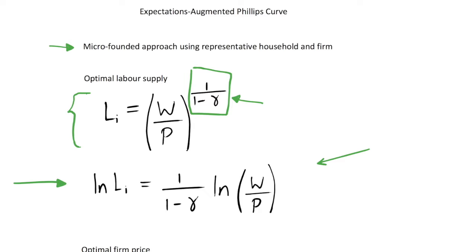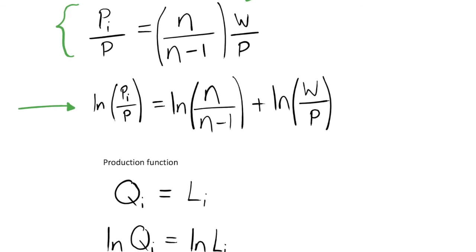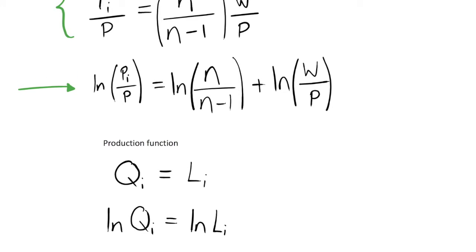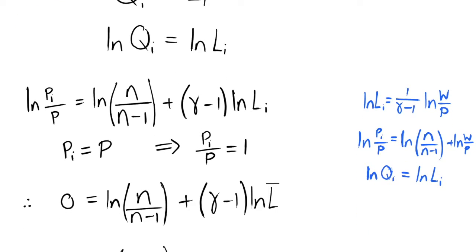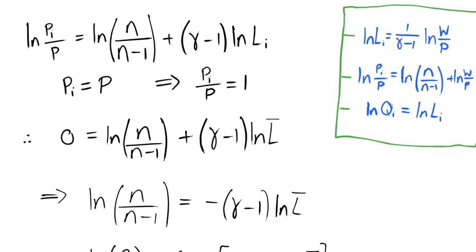Taking the natural logarithm, our optimal labour supply choice looks like this. We also derived the optimal price for a monopolistically competitive firm — their costs multiplied by the markup eta over eta minus 1 — and taking the natural log gives us the log optimal price. We also have a production function where output of firm i equals the quantity of labour it employs. These three equations — optimal labour supply, optimal firm price, and the production function — make up our markets, and we can substitute them into each other to begin deriving a Phillips curve relation.